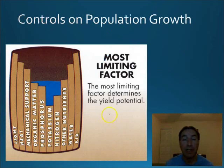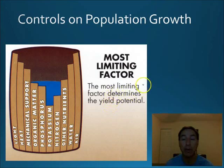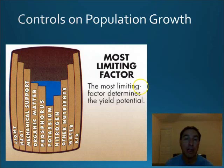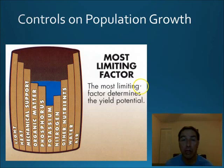Now, there are things that control carrying capacity and get the population to that point — we call those limiting factors. A limiting factor can be just about anything that controls population: it could be space, the amount of water, sunlight, food, the number of predators present, the amount of nitrogen, or the amount of phosphorus. Any of these things can be limiting factors.